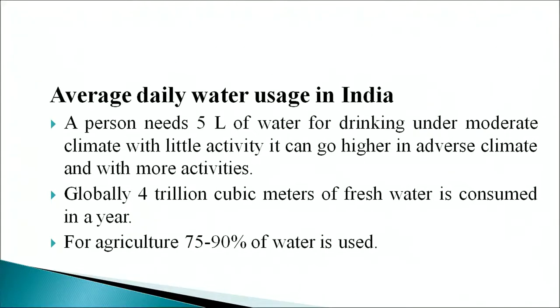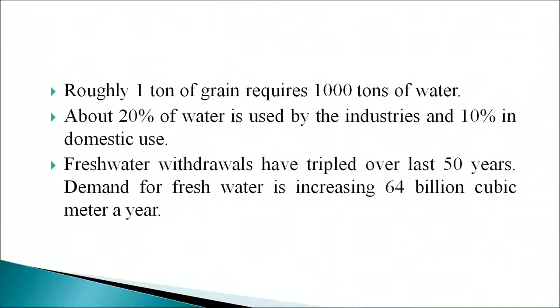Water usage can go higher in adverse climates and with more activities. Globally, 4 trillion cubic meters of fresh water is consumed in a year. For agriculture, 75 to 90 percent of water is used, and roughly 1 ton of grain requires 1000 tons of water. About 20 percent of water is used by industries and 10 percent in domestic use. Fresh water withdrawals have tripled over the last 50 years, and demand for fresh water is increasing by 64 billion cubic meters a year.